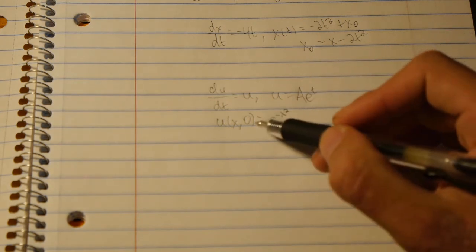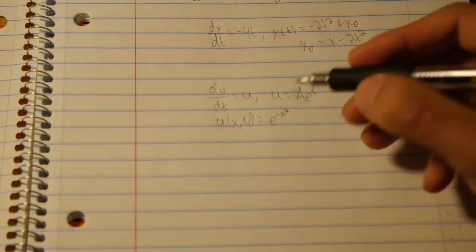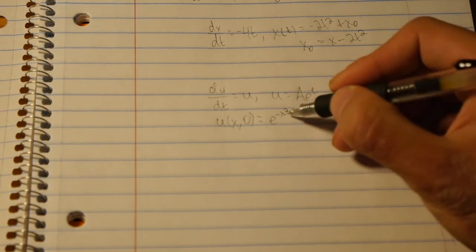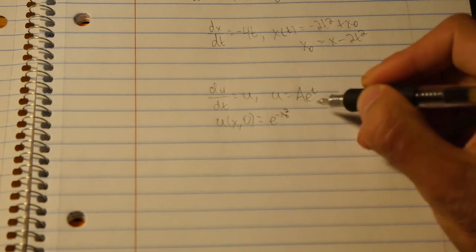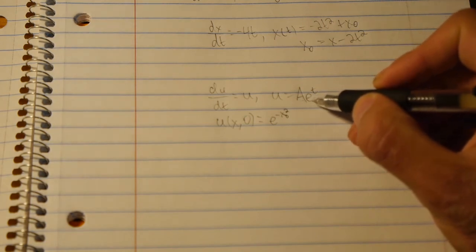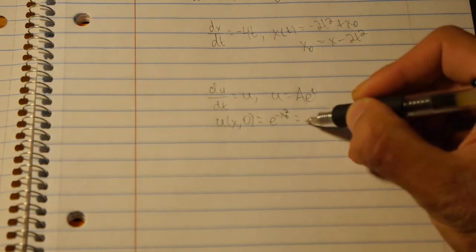Because it's only with one variable so we have u equals e to the negative x naught squared. And that is equal to A e to the 0 which is equal to A.